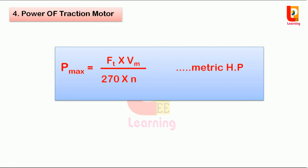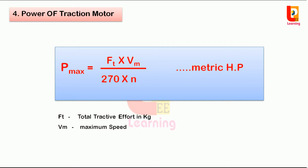Power of the traction motor: the equation gives the value of maximum power. Where Ft is the total tractive effort in kilograms, Vm is the maximum speed achieved in kilometres per hour, and eta is the efficiency of the transmission gear.